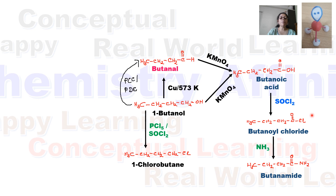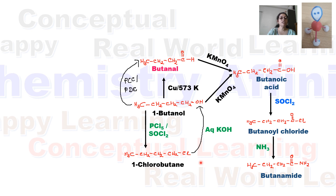A primary alcohol can also convert to an alkyl halide — here, 1-butanol converts to 1-chlorobutane when treated with PCl5 or thionyl chloride. 1-chlorobutane converts back to 1-butanol when treated with aqueous KOH. Both reactions follow a nucleophilic substitution mechanism.